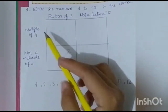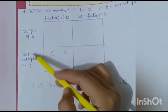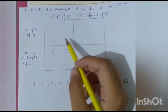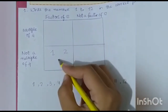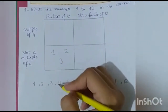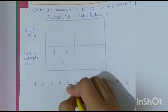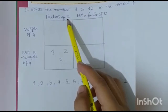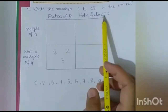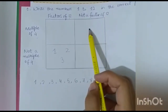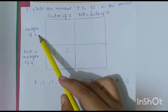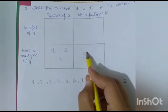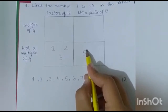Then three — three is not a multiple of 4 since 4 is larger, but 3 times 12 gives 12 so three is a factor of 12. We write it in the lower column. We have five — five is not a factor of 12 either. We check six and seven similarly and write them in the appropriate columns.